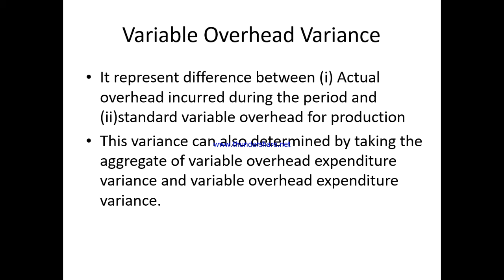Variable overhead variance represents the difference between actual overhead incurred during the period and standard variable overhead for production. This variance can also be determined by taking the aggregate of variable overhead expenditure variance and variable overhead efficiency variance.